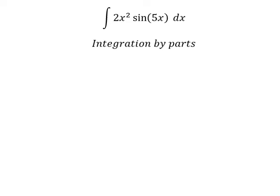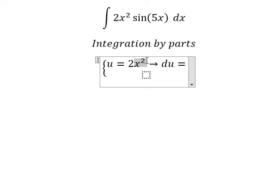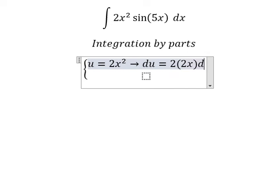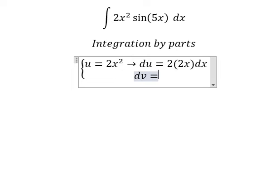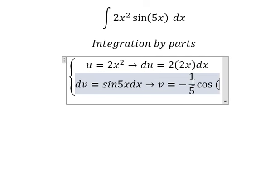I need to put u equals to 2x². After that, we need to take the first derivative for both sides. First derivative of x to the power of 2, we have 2x. dv, we have sine 5x dx. The integration of this one, we have v equals to negative 1 over 5 cosine 5x.